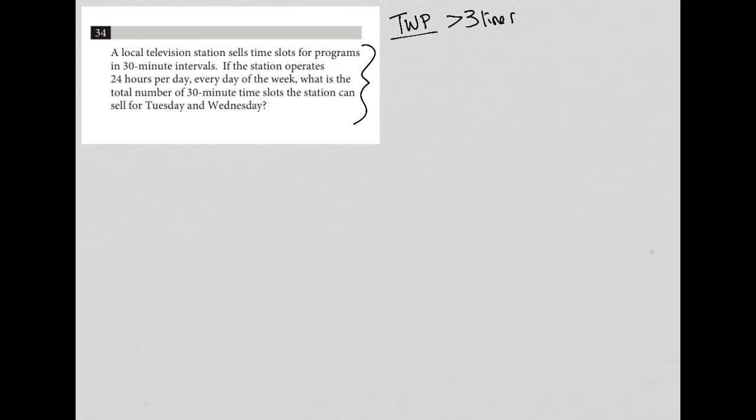The first sentence says a local television station sells time slots for programs in 30 minute intervals. I'm going to write that down: 30 minute TV programs.